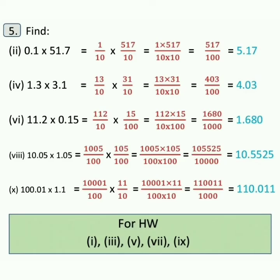Sum number 5, find. Second one: 0.1 into 51.7 is equal to 1 upon 10 into 517 upon 10, is equal to 517 upon 100, which is 5.17. Now the 4th one: 1.3 into 3.1 is equal to 13 upon 10 into 31 upon 10, is equal to 13 into 31 upon 100, which is 403 upon 100, is equal to 4.03.